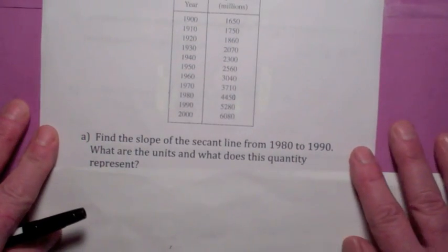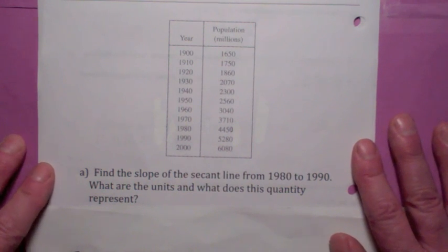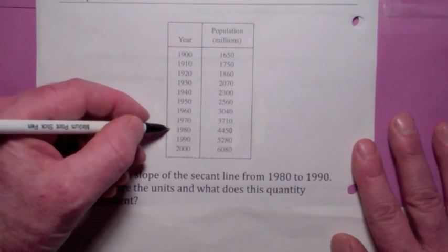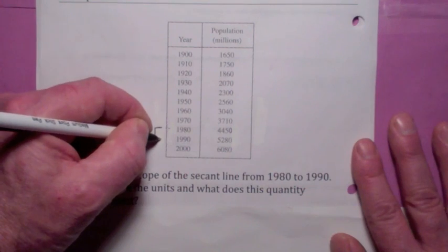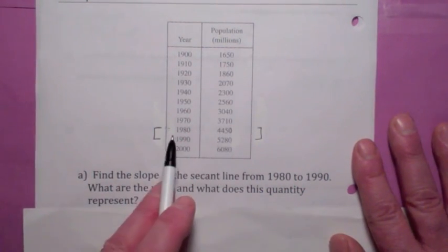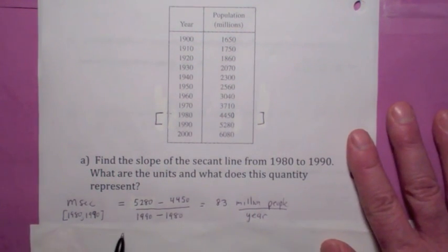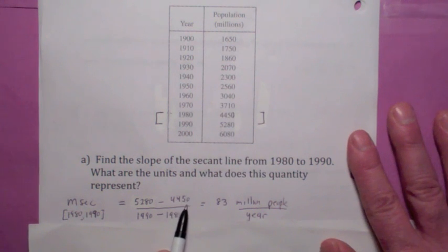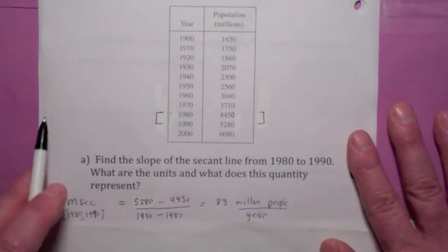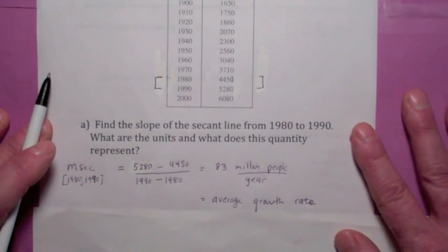What if you're given a table? Suppose we want to find the slope of the secant line from 1980 to 1990. That's the change in population in millions divided by the change in year. You get 5280 minus 4450 over 1990 minus 1980. When you simplify that, you get 83 million people per year — that's the average growth rate.